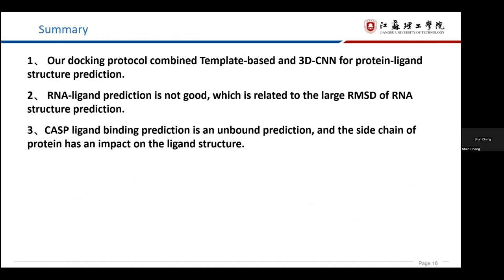In summary, first, our docking protocol combined template-based searching and 3D-CNN for protein-ligand structural prediction. Second, RNA ligand prediction is not good, which is related to the large RMSD of RNA structural prediction. Third, the CASP ligand binding prediction is an unbound prediction and the side chain of protein has an impact on the ligand structural prediction.